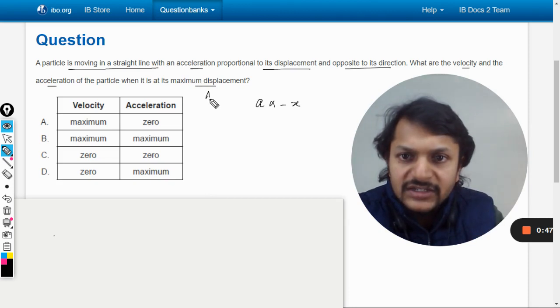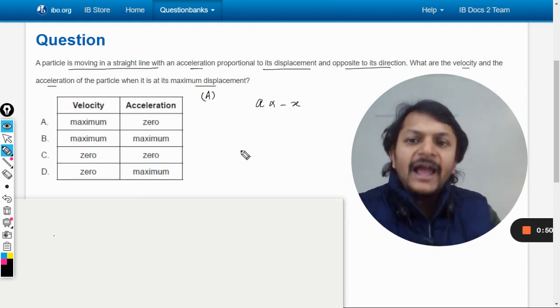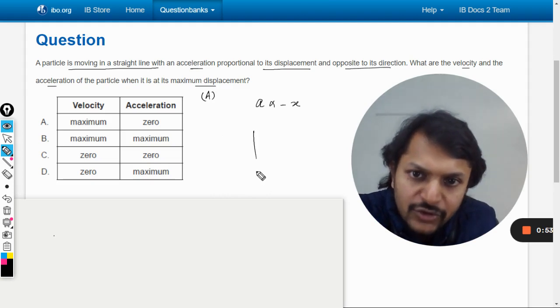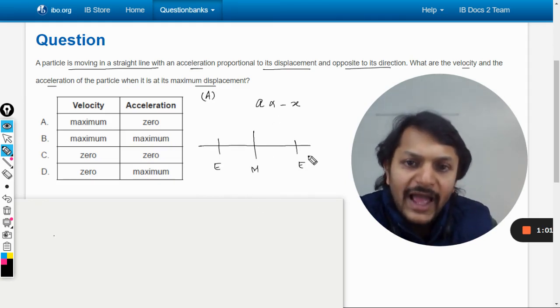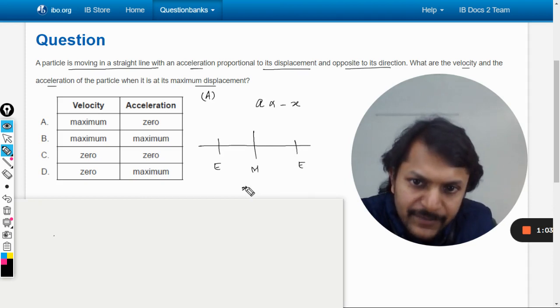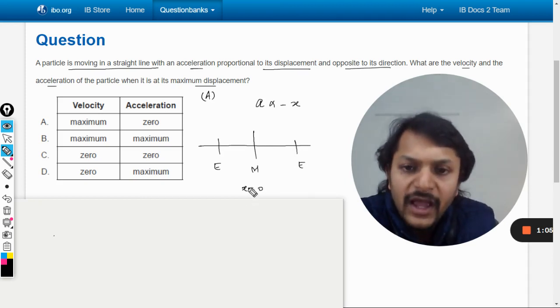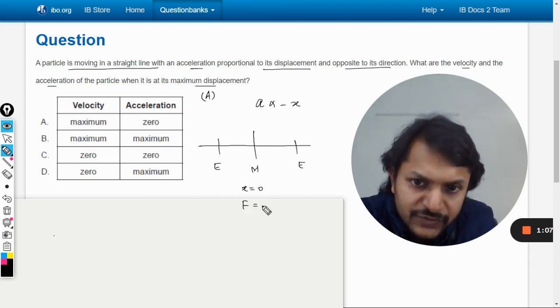Let me draw this diagram. Let's say this is the mean position and these are the two extreme positions. At the mean position, x equals zero and the restoring force equals zero.